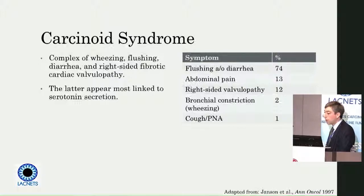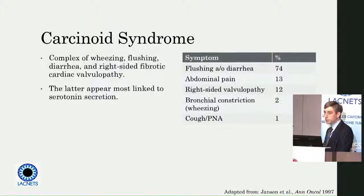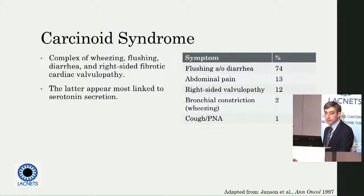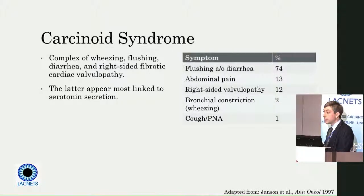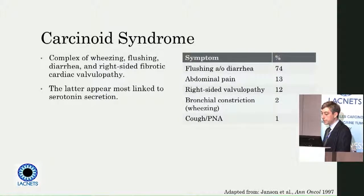The focus today is going to be carcinoid syndrome. For those of you who aren't familiar with this, it's a classic triad of wheezing, flushing, and diarrhea. We can eventually see some right-sided fibrotic disease in the valves of the heart that make the tricuspid valve have a hard time coming together. We think of those last two — particularly the GI symptoms and the heart issues — as coming from serotonin.